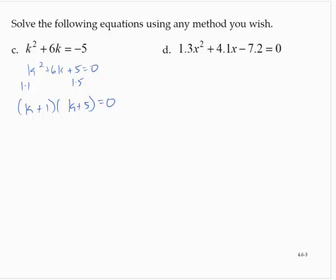Factoring was really easy in that case, so I'm going to use it. k + 1 = 0, which means k = -1. k + 5 = 0, which means k = -5. Quadratic formula would have worked, factoring was easier.